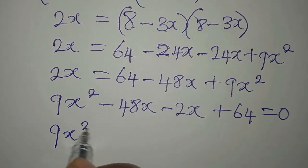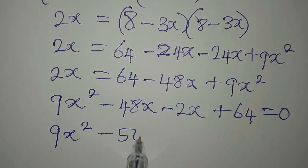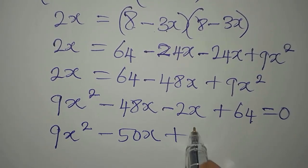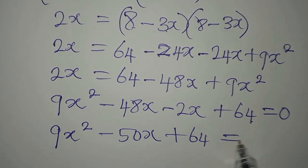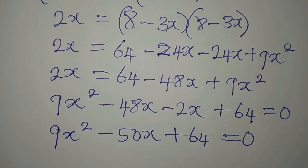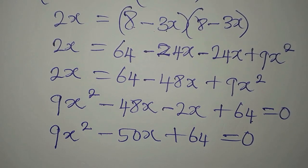So this is a quadratic equation, and here is our quadratic equation: 9x squared minus 50x plus 64 equals 0.